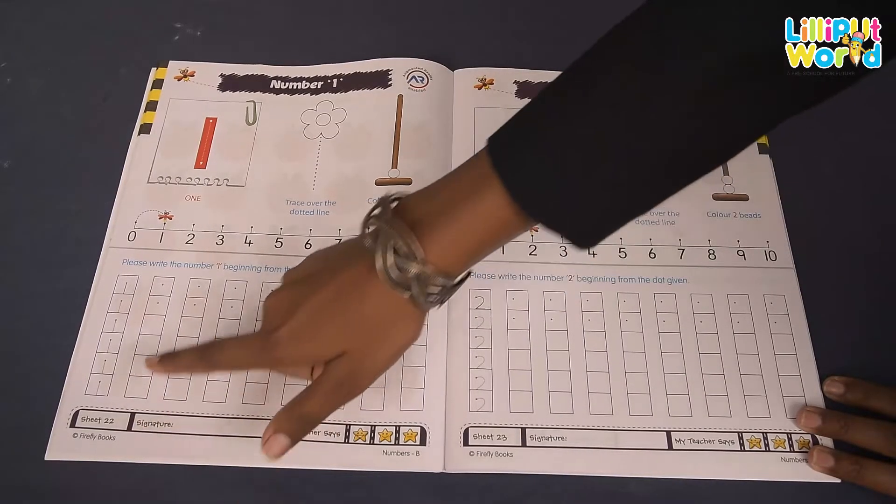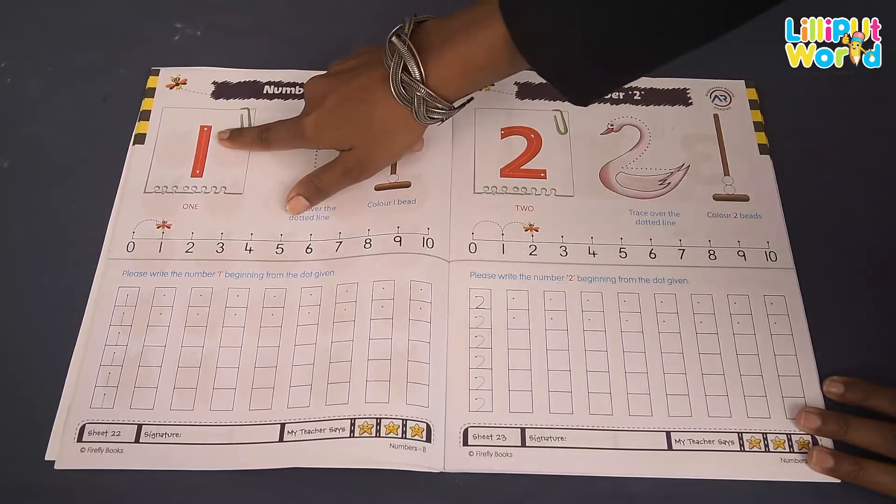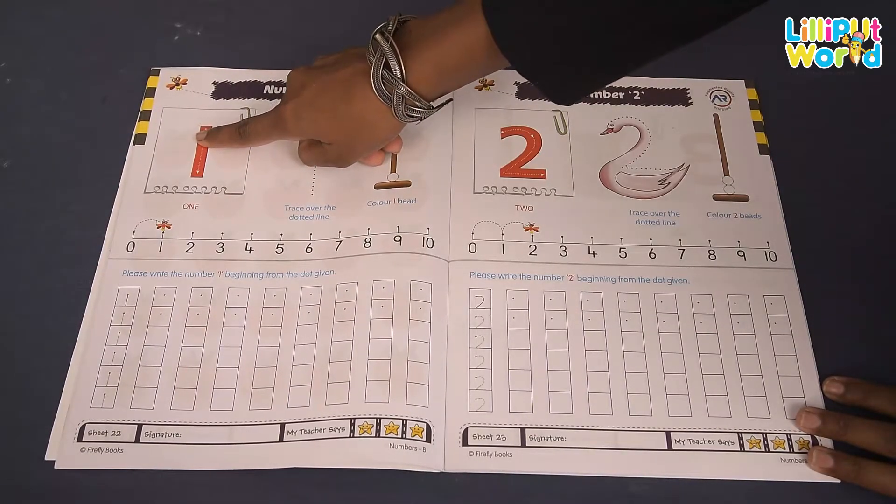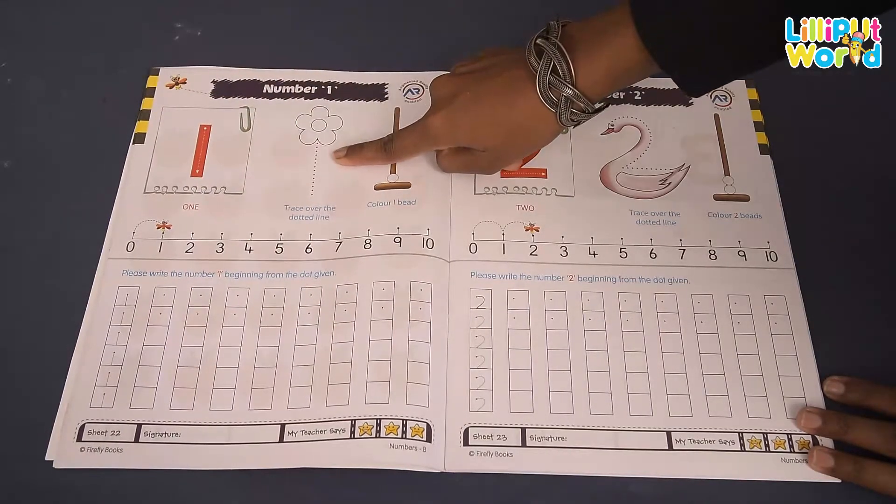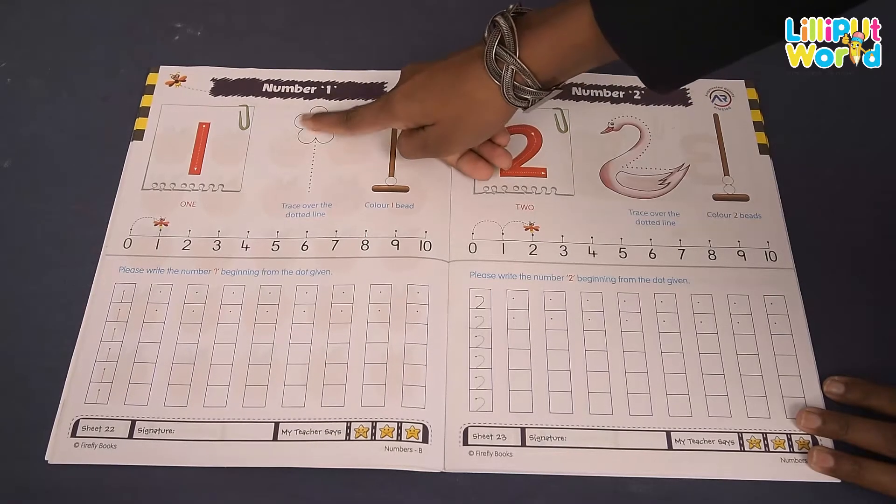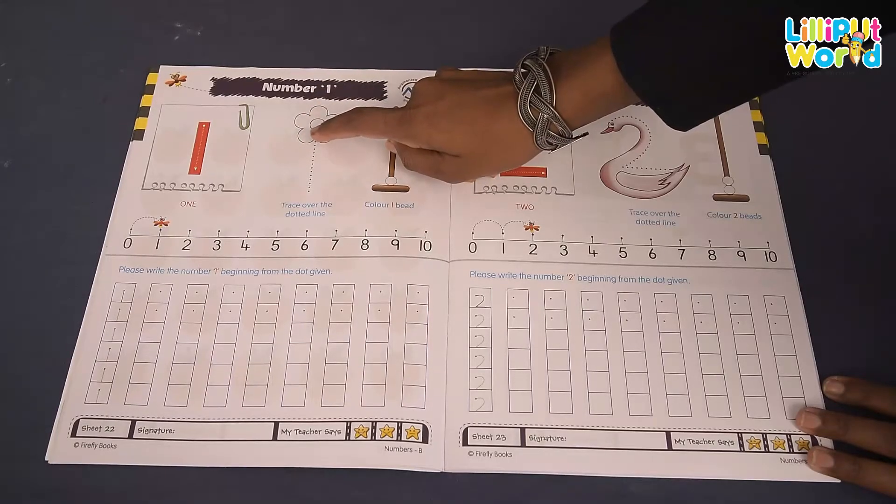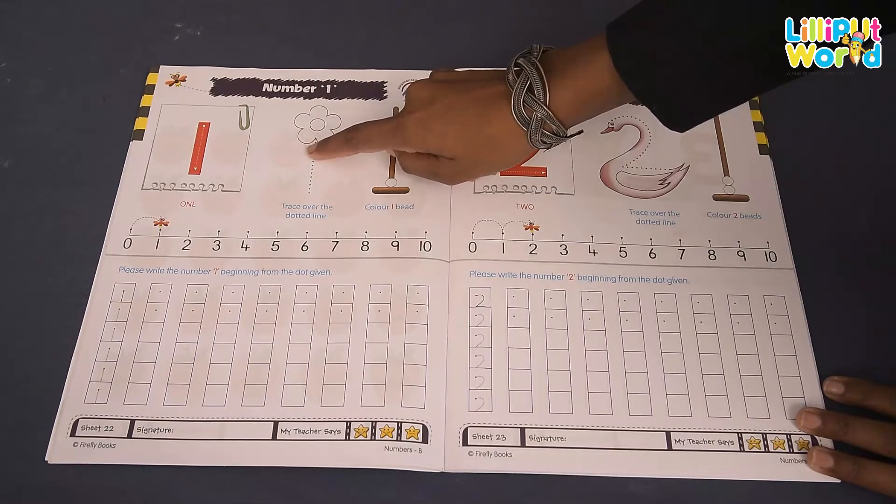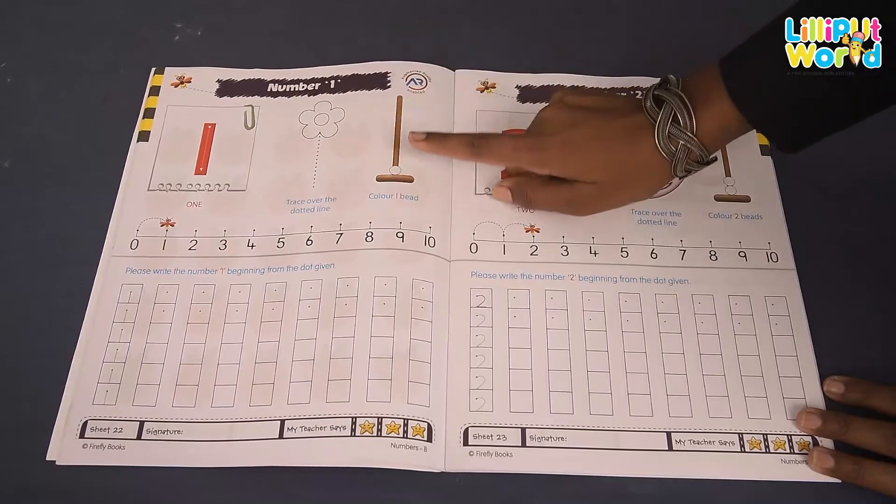What is here? Number one. First you have to trace with your finger, and then trace over the dotted line. What is this? A flower. The hidden number is one. You will join the dots and you will find number one. How many bits are there? Only one bit is here.